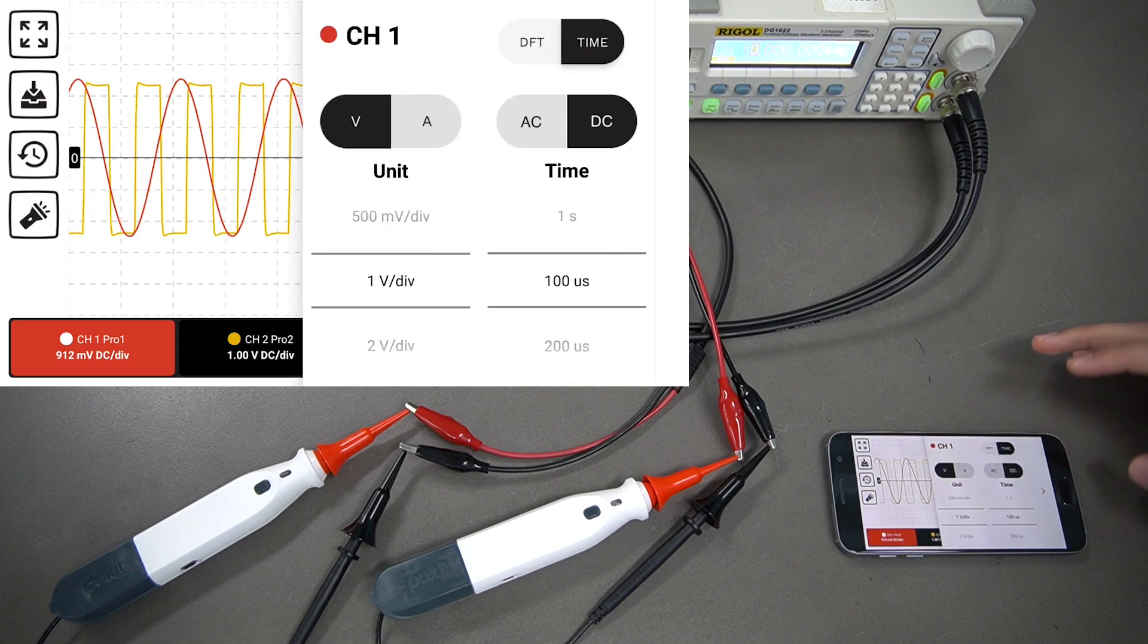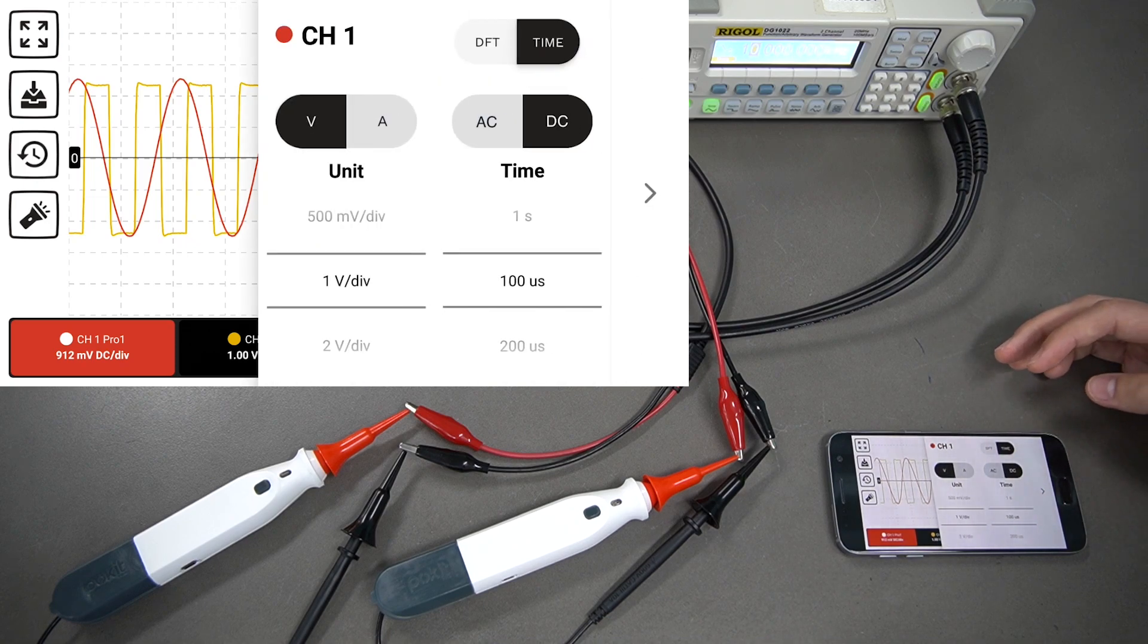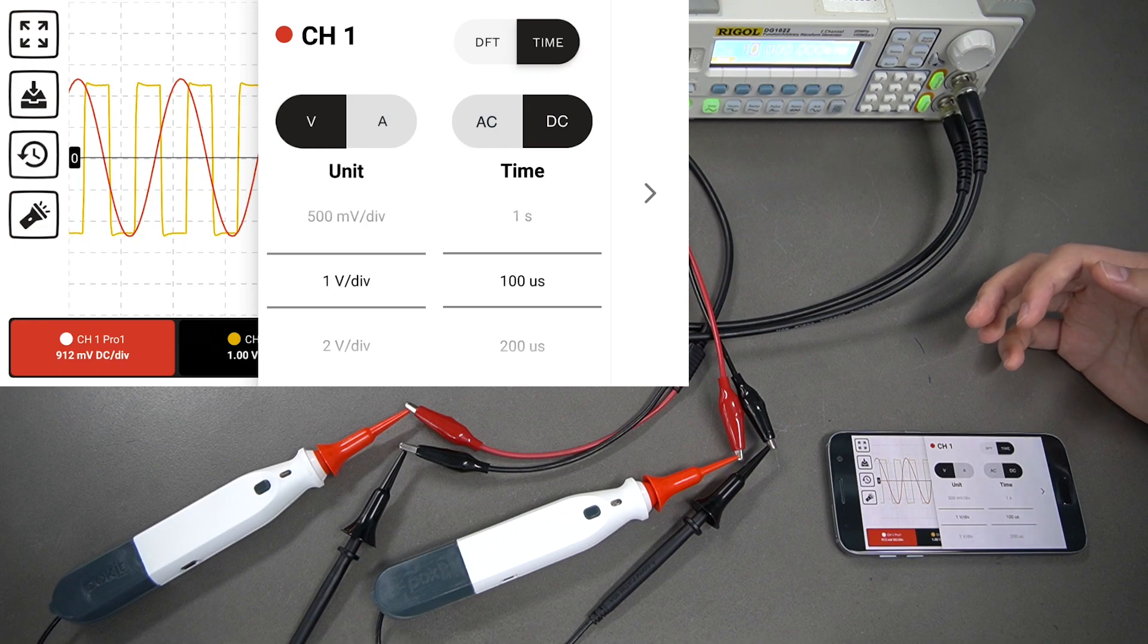Select the mode button here on the right. You can change a few different things, like switching between voltage and current. To do that, you'll need to change the switch on the side of the Pocket Pro unit.